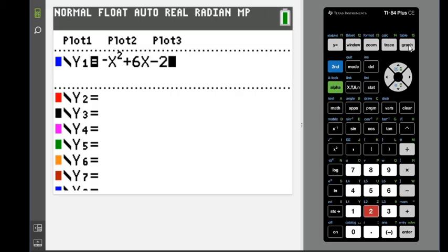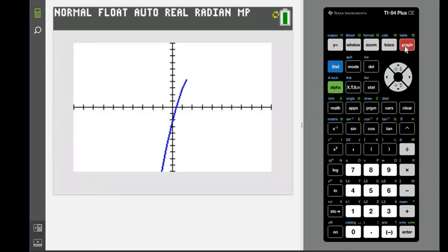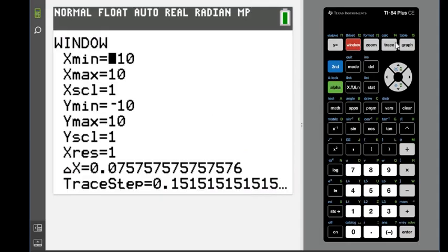And now when I hit graph on this, we'll look to see if the screen needs to be adjusted. But with this one, because we can see the highest point, we don't need to adjust the window. If you couldn't see the highest point, you would adjust the window.